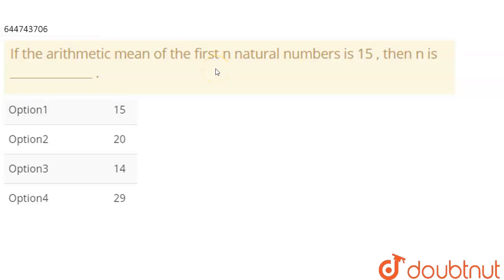If the arithmetic mean of the first n natural numbers is 15, then what is n? We need to find the value of n and check which option is correct.